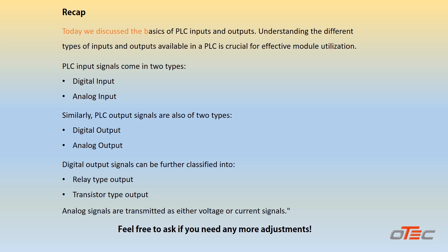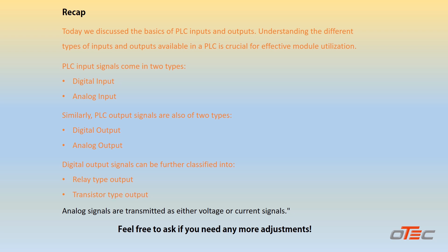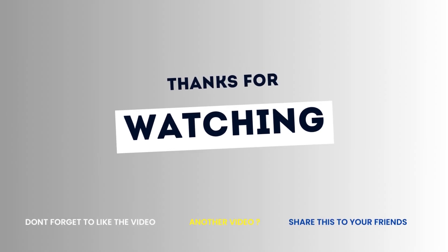Today we discussed the basics of PLC inputs and outputs. Understanding the different types of inputs and outputs available in a PLC is crucial for effective module utilization. PLC input signals come in two types, digital input and analog input. Similarly, PLC output signals are also of two types, digital output and analog output. Digital output signals can be further classified into relay type output and transistor type output. Analog signals are transmitted as either voltage or current signals.